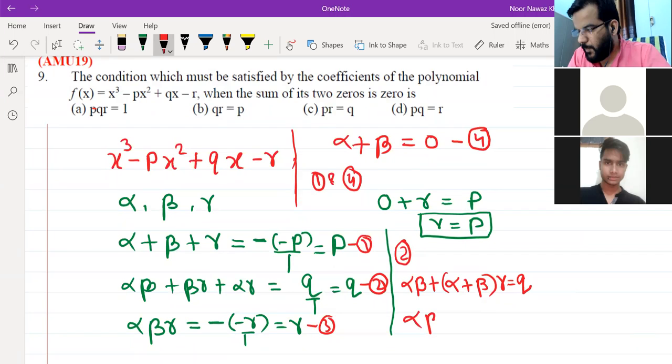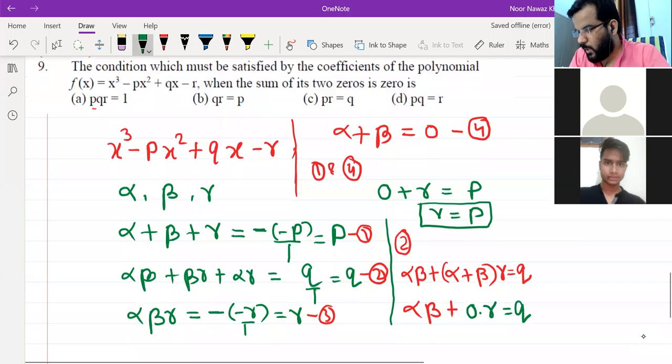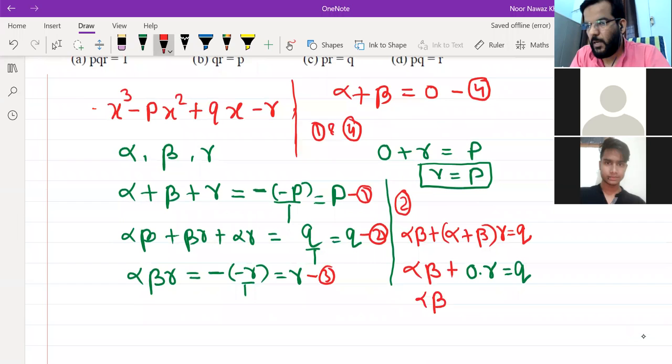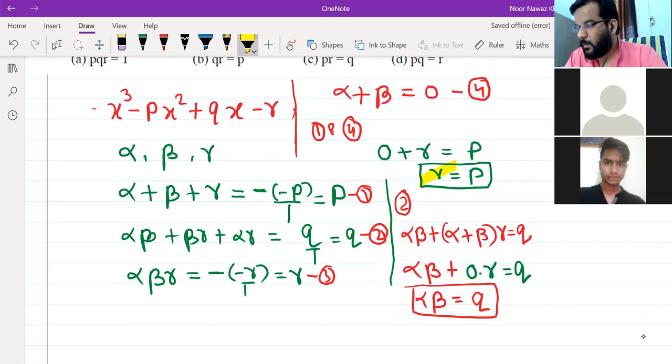Alpha and beta, alpha plus beta zero into gamma would be equal to gamma. Now how much of gamma is equal to P and how much of alpha and beta is equal to Q? And what is equation 3? Alpha, beta, gamma is equal to R. Have you understood what happened?